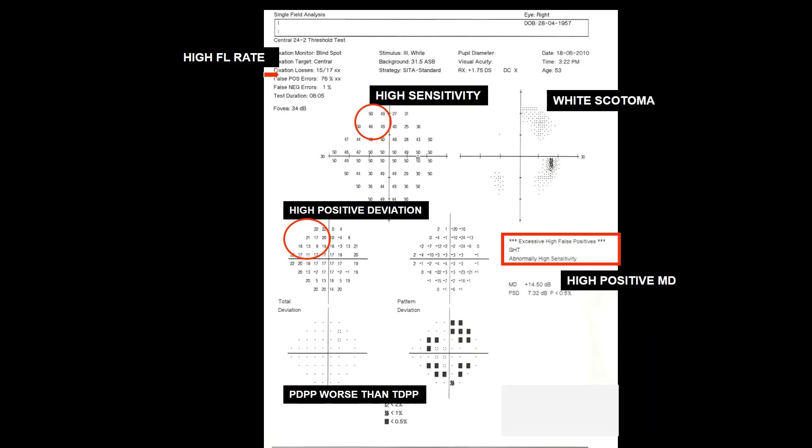This is a classic trigger-happy field when an anxious patient presses the response button even when the stimuli is not seen, resulting in a large number of false responses. This affects test results in a number of ways such as high fixation loss, high false positive response which causes high measured threshold values at most of the points to a level that humans cannot see, resulting in patches of abnormal light areas on grayscale known as white scotoma.